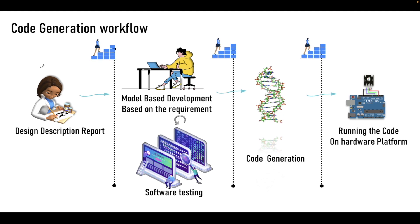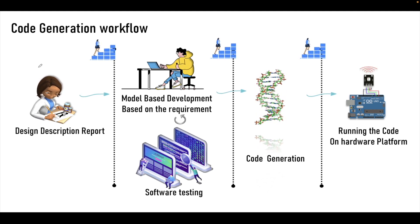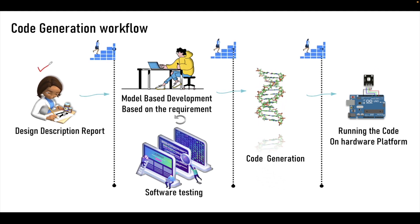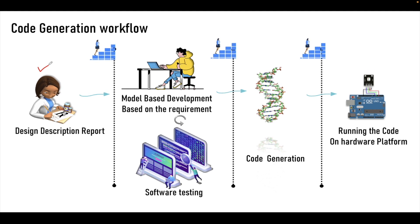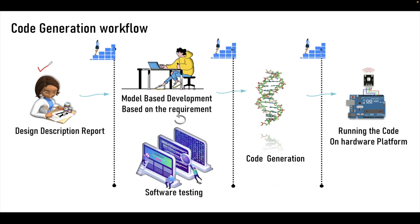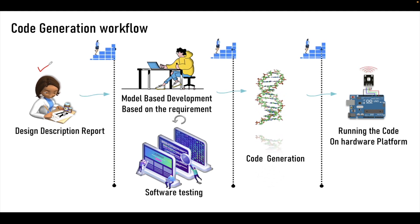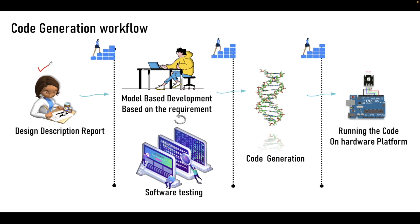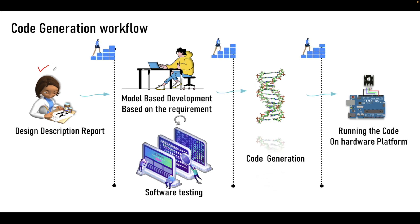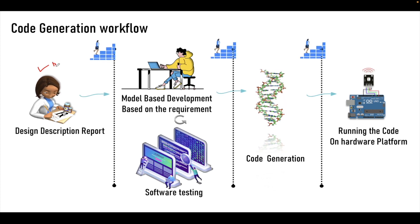The code generation implementation or the model-based design that we have includes first the development of the requirement document. This requirement document includes the description of what we are going to be designing, and with the help of this document we can verify the individual stages whether those are behaving properly or not. This is the base for whatever the design that we have.